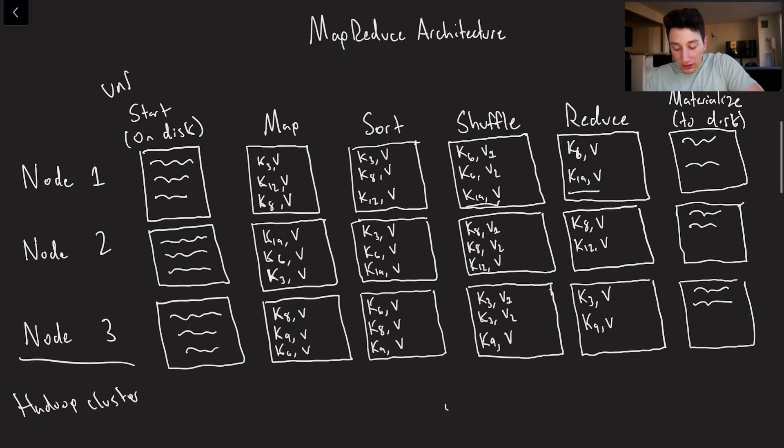So to start, we've got all this unformatted data on disk. And basically, the job there is to convert it somehow to a more standardized format that's useful to us. And obviously, that's going to be the job of the mapper.